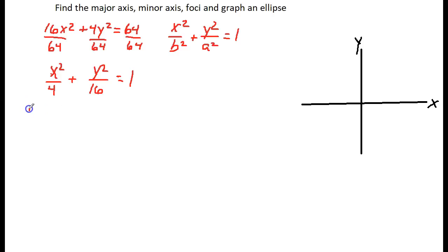So a squared equals 16, taking the square root, that means that a will equal 4. And b squared equals 4, so that means that b will equal 2.